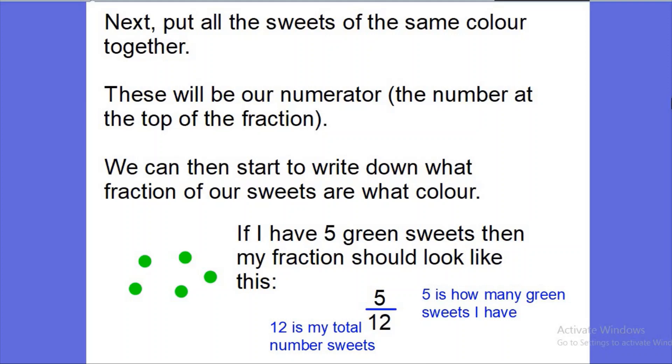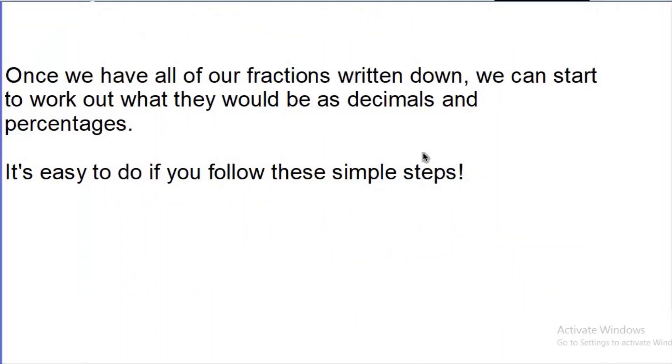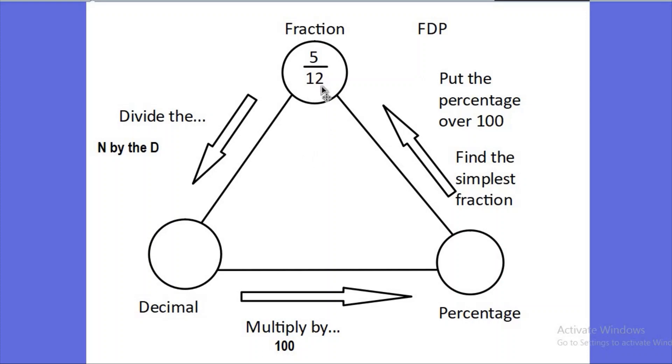Once we have all of our fractions written down, we can start to work out what they would be as decimals and percentages. It is quite easy but you do need to follow these simple steps. Remember, you can pause the video, you can rewind the video whenever you want. Let's have a look. I'm going to go with what I had before: five of my 12 sweets, or five-twelfths of my sweets, are green. So what I'm going to do is show you how to turn your fraction into a decimal, and then your decimal into a percentage.